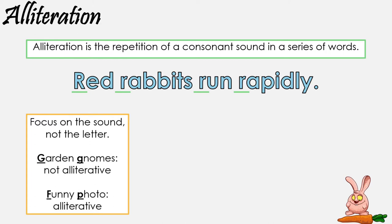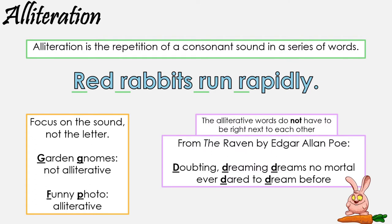So 'garden gnomes' — while both words begin with a G, it's not alliteration. But 'funny photo' is. It's to do with the sound, not the letter. Now a common myth is that the words all have to be right next to each other, but that's not true. Take a look at this example from Edgar Allan Poe's poem The Raven: 'Doubting, dreaming dreams no mortal ever dared to dream before.' It repeats the D sound, and it sounds a lot more mature than the childish 'red rabbits' example from before.